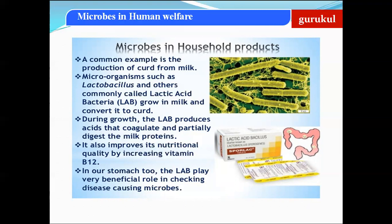Microbes are used in household products. One of the best examples is the production of curd from milk. The microorganism involved is Lactobacillus and other bacteria, collectively called lactic acid bacteria or LAB. They are grown in milk and convert it into curd. During their growth, LAB produces acids that coagulate and partially digest the milk protein, casein.